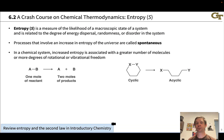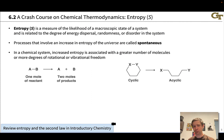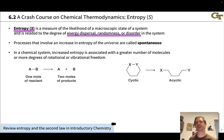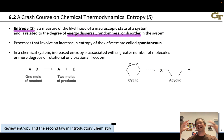Enthalpy is only half the story in chemical thermodynamics. There are some endothermic processes that are nonetheless spontaneous, and to explain that we need to account for the second law of thermodynamics: spontaneous processes result in an increase in the entropy of the universe. Entropy is a measure of energy dispersal, randomness, or disorder in a system — a sense of the likelihood of a particular macroscopic state. Generally, higher entropy is associated with the gas phase, more dispersed phases, a larger number of molecules, and greater mass.